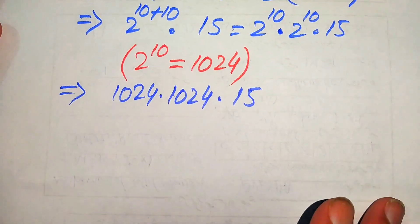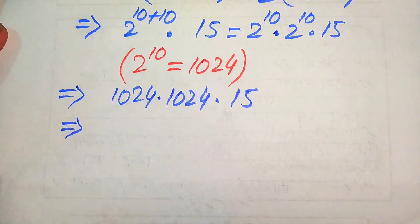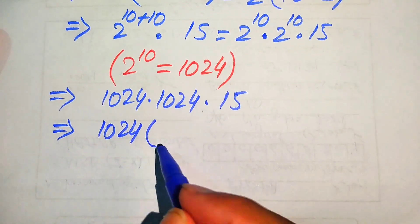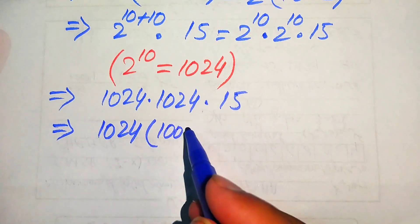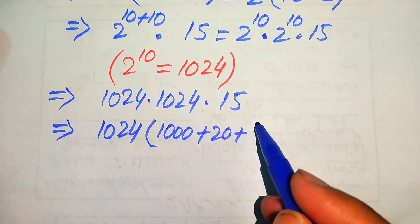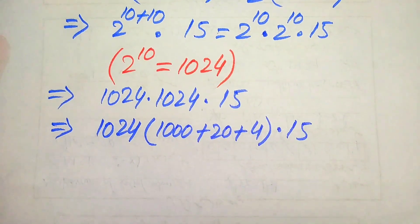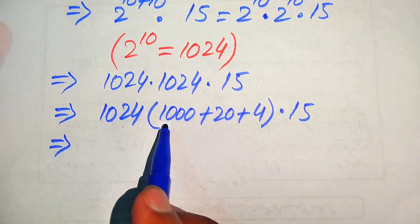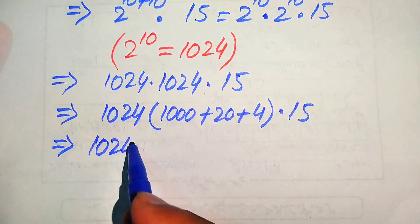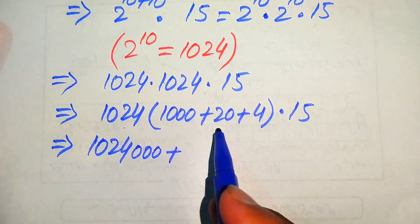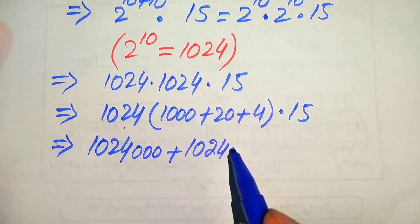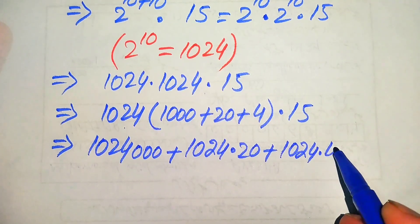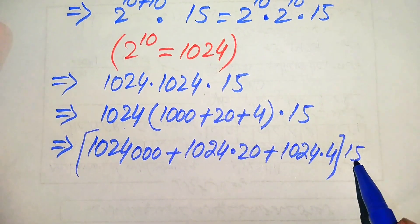For further simplification, we multiply these two large numbers without a calculator. We break 1024 as 1000 plus 20 plus 4, multiplied by 1024. So we multiply 1024 on each of these values: 1024 times 1000, plus 1024 times 20, plus 1024 times 4. The final result is then multiplied by 15.